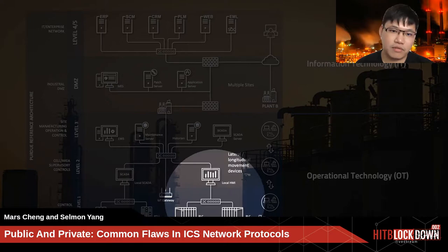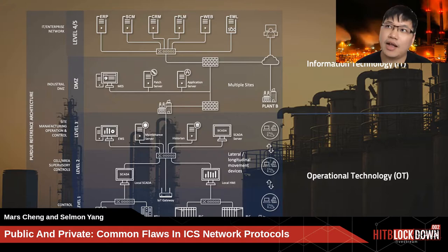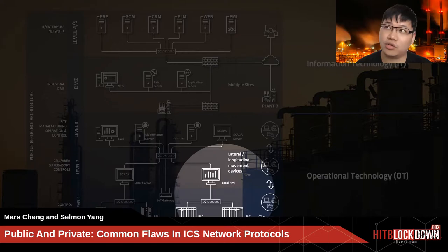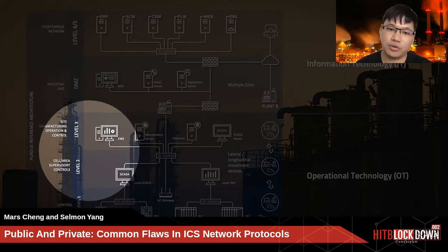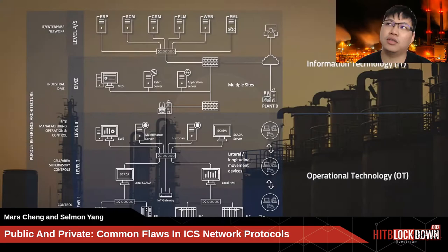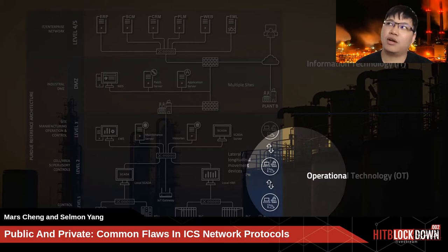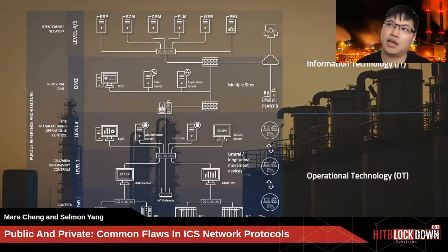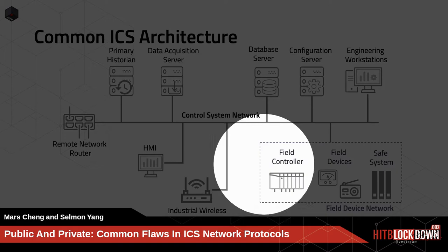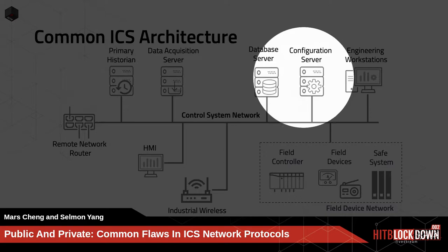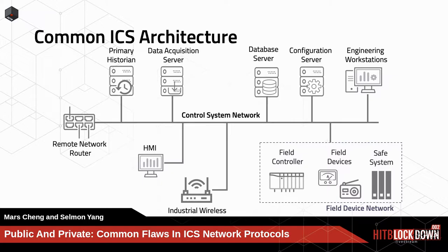In level 0, the process layer, you have sensors or actuators. In level 1, you will see RTU, PLC, or IED kinds of controllers. In level 2, you will see the local HMI, or what we call SCADA, in the area supervisory control layer. In level 3, you will see engineering workstations, servers, and instruments. Combined from level 0 to level 3, we have OT. Digging deeper into the ICS architecture, you find common components: HMI, field controllers, field devices, safety systems, servers, and engineering workstations.